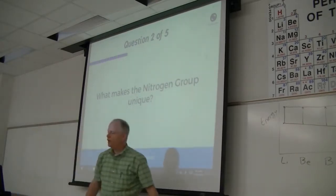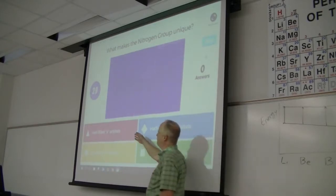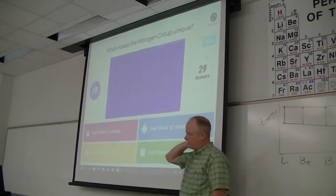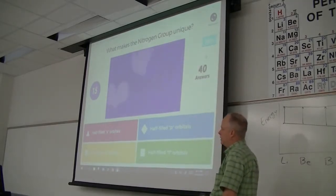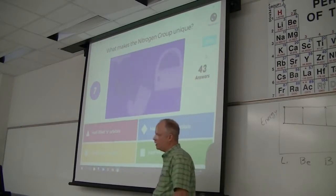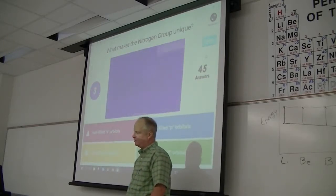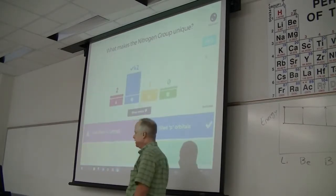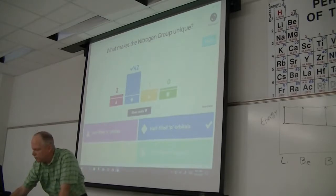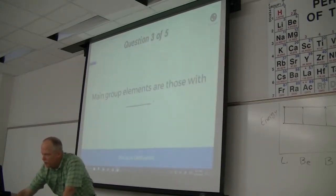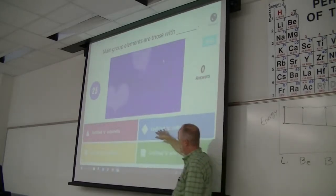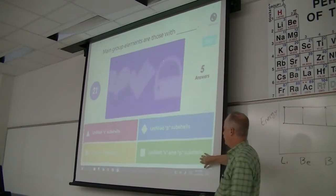What makes the nitrogen group unique? Red is a half-filled s orbital, blue is a half-filled p orbital, yellow is a half-filled d orbital, green is a half-filled f orbital. This is the p-block, so that would be a half-filled p subshell. Main group elements are those with unfilled s and p subshells — the s-block and p-block would be the main group blocks, excluding transition metals or the f-block elements.